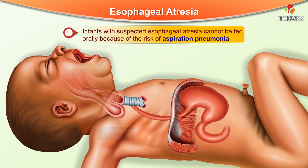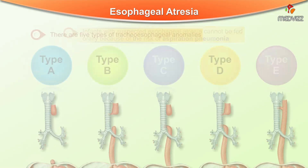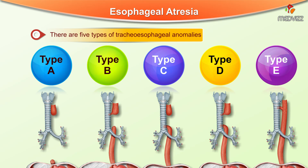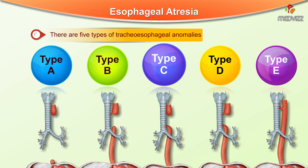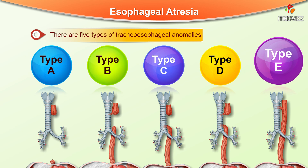Infants with suspected esophageal atresia cannot be fed orally because of the risk of aspiration pneumonia. There are a number of types of tracheoesophageal anomalies, but the five most common ones are classified as type A, type B, type C, D, and E.